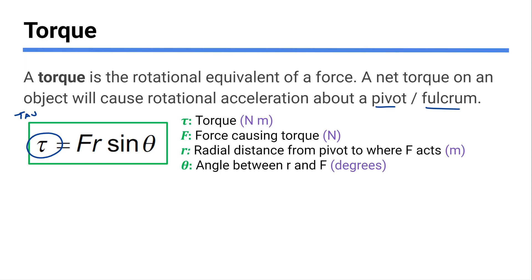There's some angle stuff in the equation. F is the force causing the torque. R is the radial distance from the pivot point to where the force is acting — how far away from the pivot point is your F. And theta is officially the angle between R and F. You want to know that, especially as a data booklet knowledge thing. There are lots of equations of this style — like work equals F·s·cosθ where theta is the angle between F and s — with some vector math going on behind the scenes.